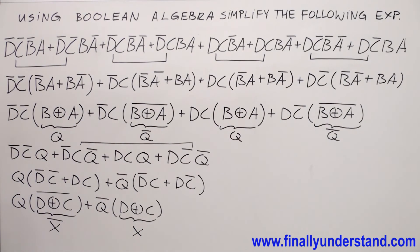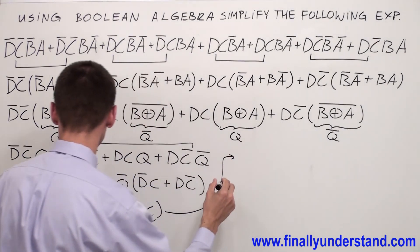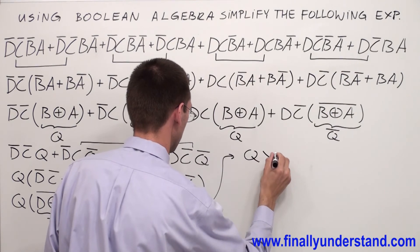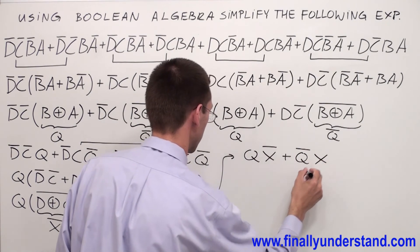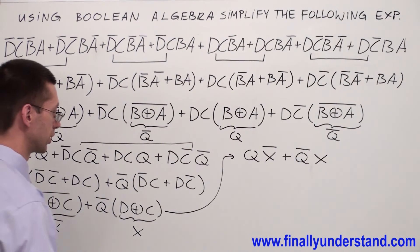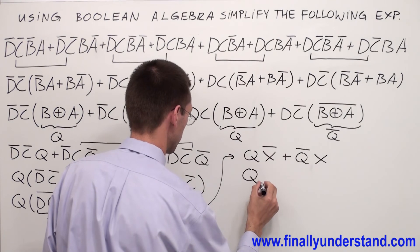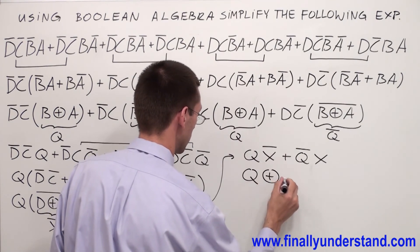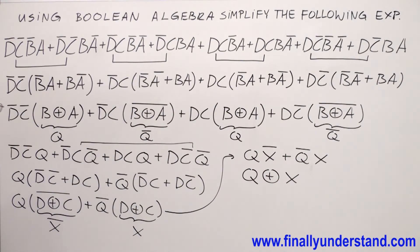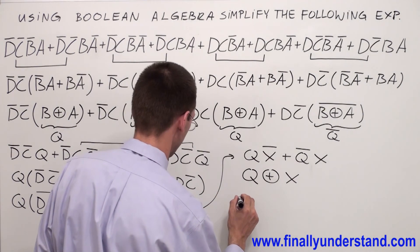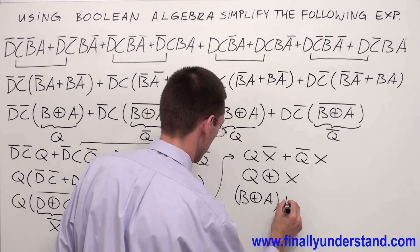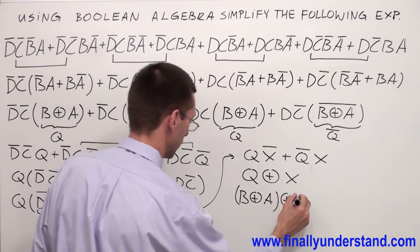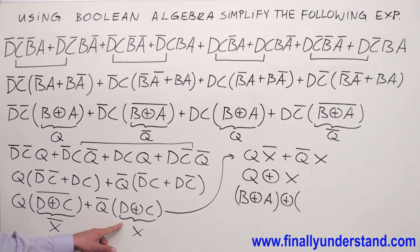My expression right now looks like this: Q X0 or Q0 X. As you can see, this is nothing else but exclusive OR. So I'm going to rewrite this as an exclusive OR: Q exclusive OR X. Now, we said that Q is equal to B exclusive OR A. So instead of Q, I'm going to write B exclusive OR A, exclusive OR. And X we said is D exclusive OR C.